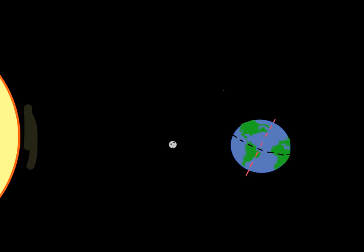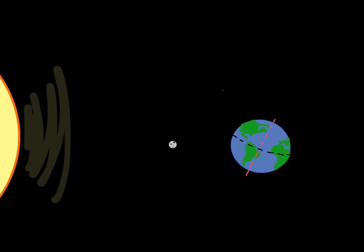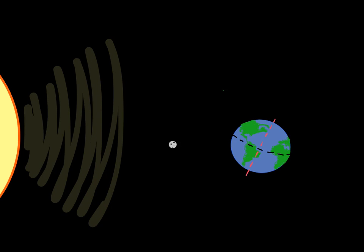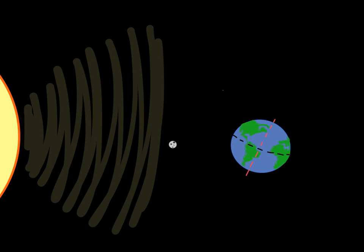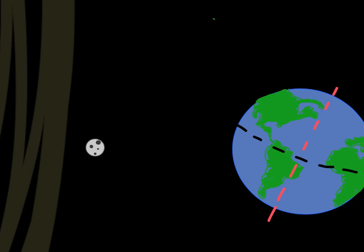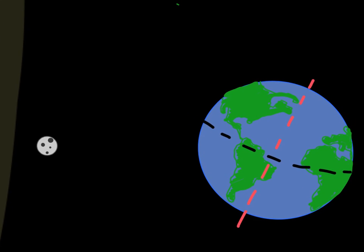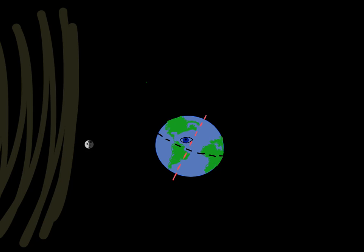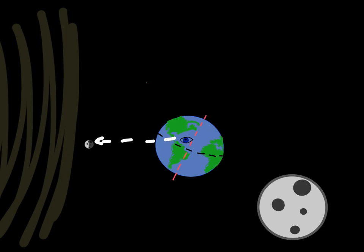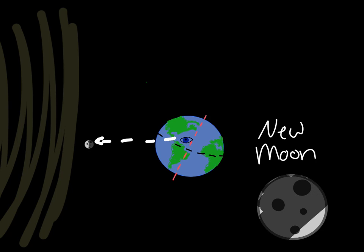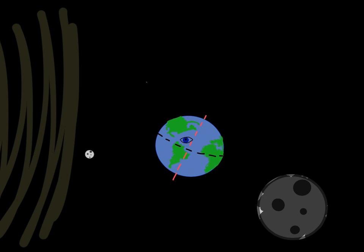To understand the moon phases, you have to imagine how sunlight hits the Earth. Sunlight travels this way. We're going to start with the moon right here in this position. Moon phases are according to what we see from Earth, so we're always going to be the point of view from Earth. In this position, the opposite side of the moon has light. The side of the moon that we see has no light. We call this a new moon — that's where we see a totally dark moon.